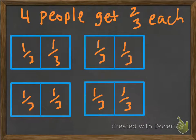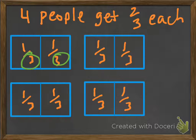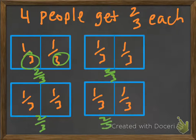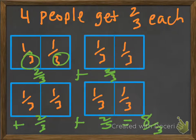Let's try another one. So if 4 people get 2 thirds each, what does that look like? Here we are — we still have our same denominator all the way across, and each of these is 2 thirds. And you could easily just add them up: 2 thirds plus 2 thirds plus 2 thirds plus 2 thirds. And we're going to come up with 8 thirds — counting 1, 2, 3, 4, 5, 6, 7, 8. We get 8 thirds.